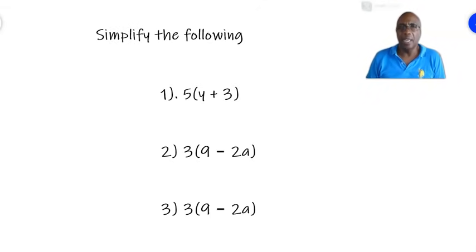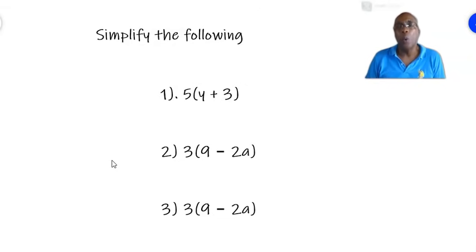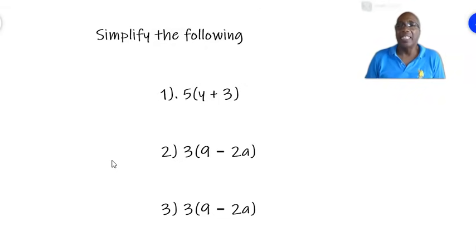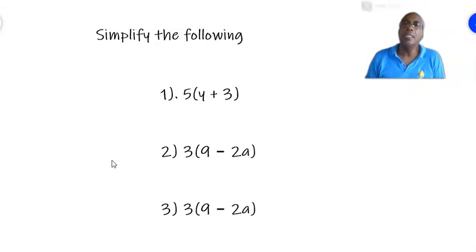Look at this first set of examples. They all have terms in a bracket. So, the first one — this is 5 multiplied by what is in the bracket, which is y plus 3. So, we are multiplying 5 by the whole bracket. To do that, we use what we call in algebra the distributive law. Any time you are multiplying a term outside a bracket by terms inside a bracket, you multiply the term outside by each term inside.